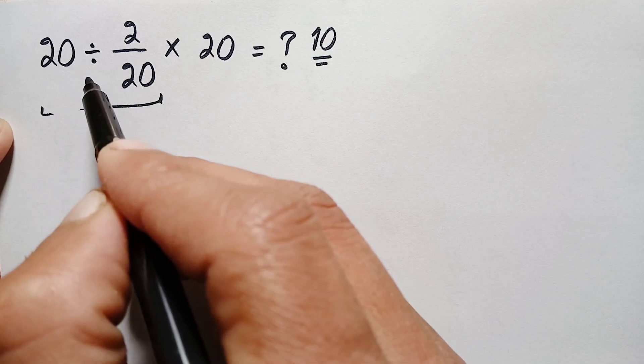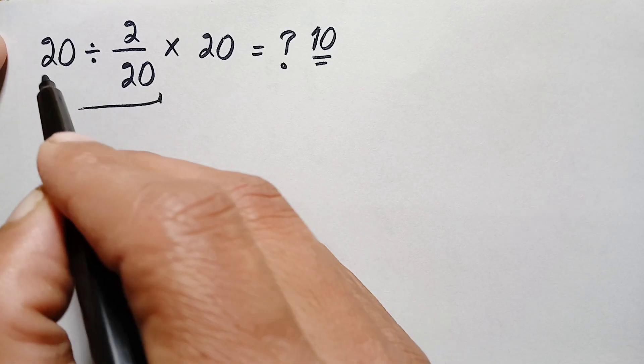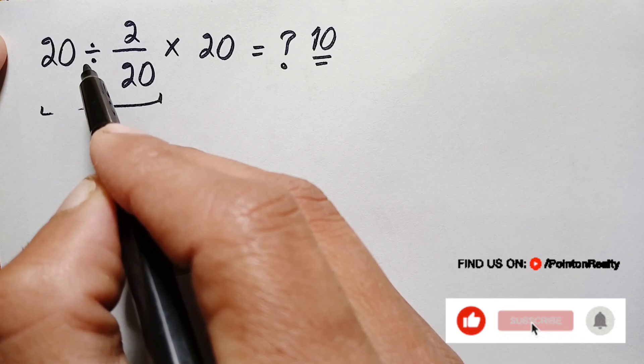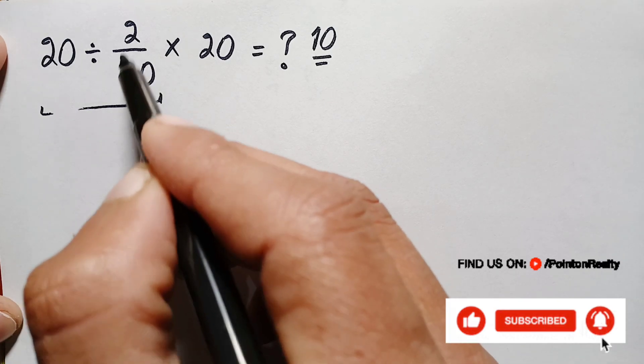Now to do this division here we will apply the KCF rules. And by KCF rules we will leave the first number as the same, we will change division sign to multiplication, and we will take the reciprocal of this one fraction.